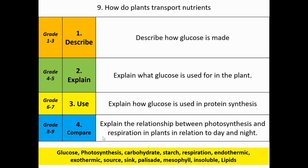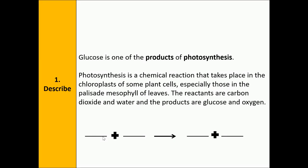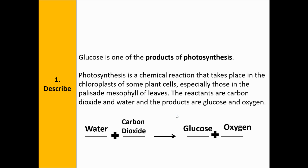Let's mark using a green pen or different coloured pen. Tick correct answers; correct any missing details or errors. Model answer: glucose is one of the products of photosynthesis. Photosynthesis is a chemical reaction that takes place in the chloroplasts of some plant cells, especially those in the palisade mesophyll of leaves. The reactants are carbon dioxide and water, which produce glucose and oxygen. This is how glucose is made.